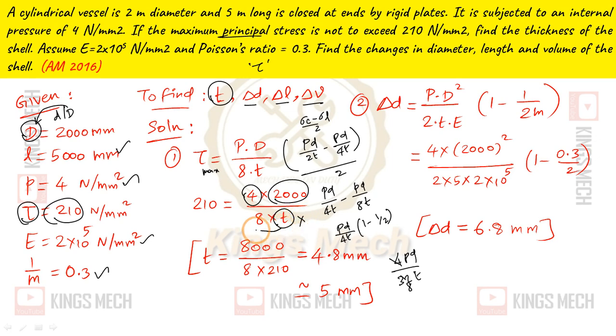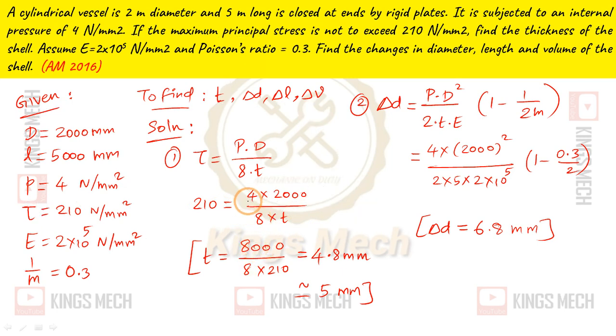To find the thickness: τ_max = 210, so 210 = (4 × 2000)/(8t). Solving: t = 8000/(8 × 210). This gives t = 4.8 mm approximately.